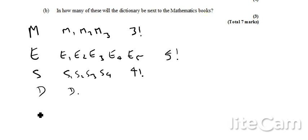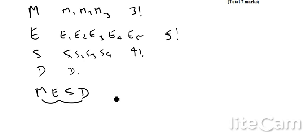And then you've got to remember that I've still got all these blocks of books. The M stands for all the maths books which are together, the E is for the English books which are together, all the science books, and obviously the dictionary. How many ways of rearranging these where I've put them all together? Well, there's four of them, so there's going to be four factorial ways of rearranging the blocks of books themselves.